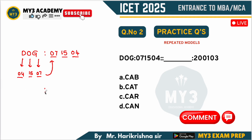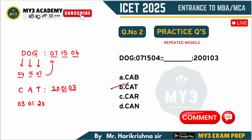In the similar way, what will be written as 200103? If you look at 03 first, we take that, next 01, next 20. So 03 means C, 01 means A, 20 means T. So the answer will be CAT, which is available as option B. Mark it as the answer choice.